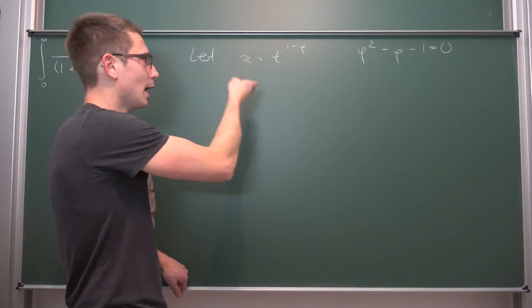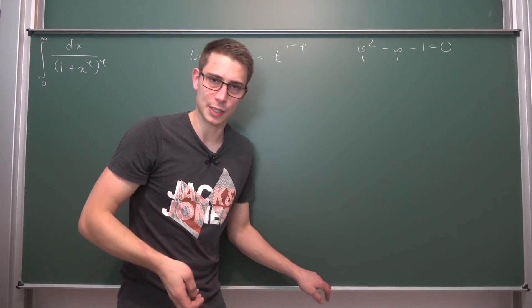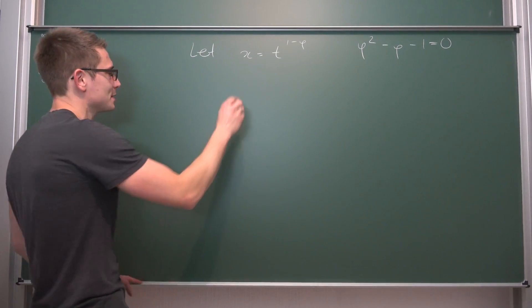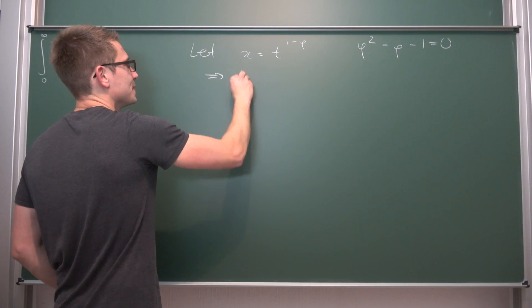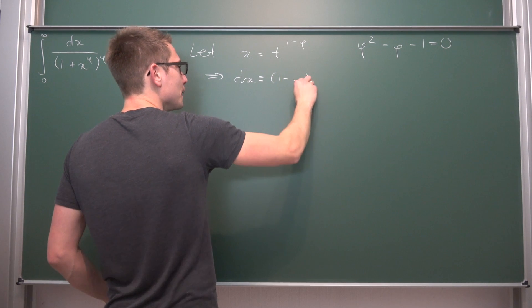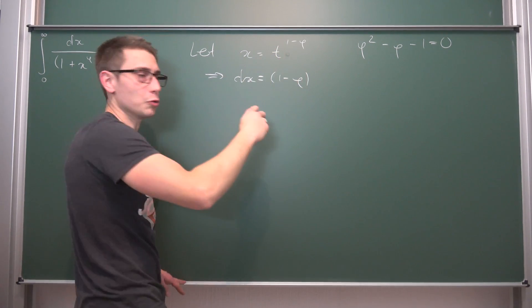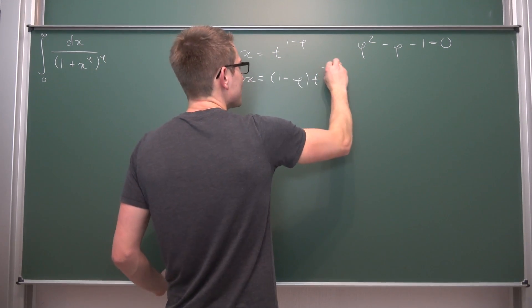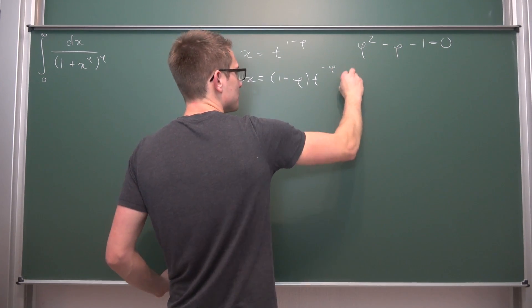Now how is this right here something that we can make use of? First let us implicitly differentiate both sides. That means dx is going to be equal to 1 minus phi times t to the negative phi power dt.